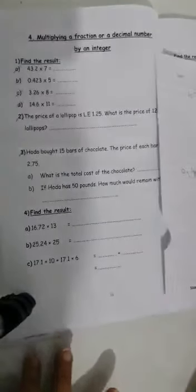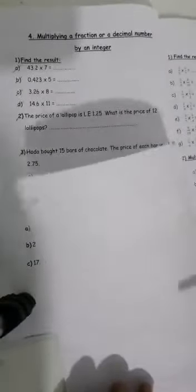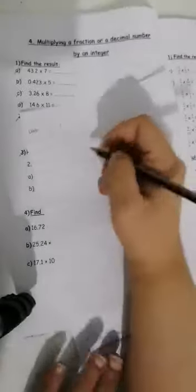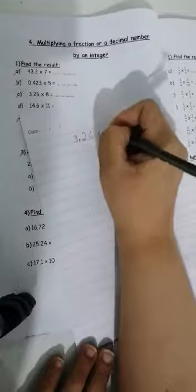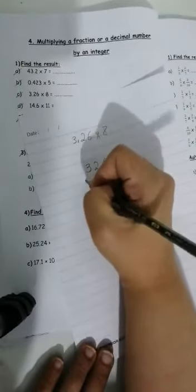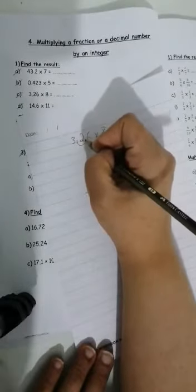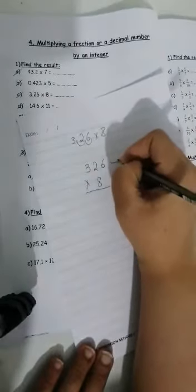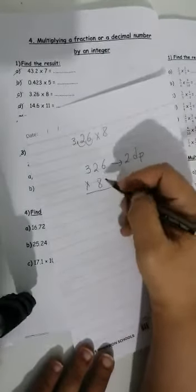Let's see another example. I have number C. I have 3.26 times 8. Take it to the work out. 3, 2, 6 times 8. Don't forget how many decimal places. 1, 2. So I will write here 2 decimal places. And then I start solving.